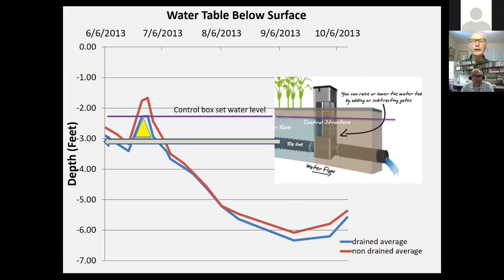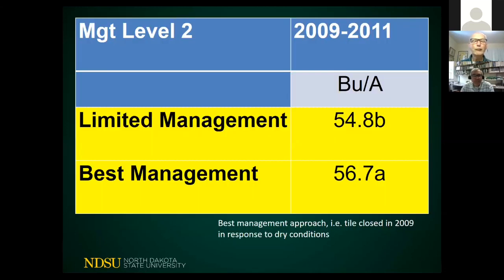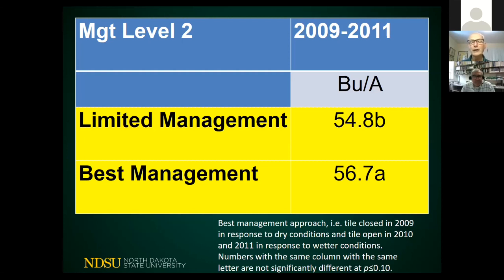So here we're talking about transferring and keeping that water for the next crop. We did this experiment on a wheat study with limited management and best management. Under best management, in the drier conditions of 2009, we closed the box with a block to raise the water table slightly, whereas under the wet conditions of 2010 we opened the box so the water table could go down and there was no interference of excess moisture in crop production. The letter behind the two wheat yields indicates there was significantly higher yield with best management compared to limited management. In other words, you have to manage the water table on a year-by-year basis, and in this case I had an increase of 3.5% in yield due to the management.